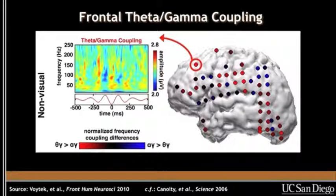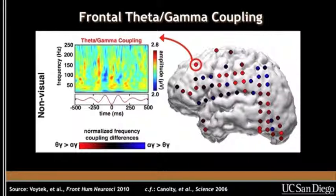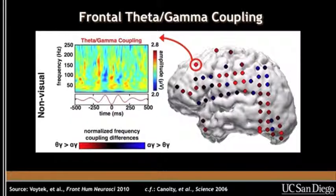Here you can see the event-related spectral perturbation in the colored plot, averaged across time and frequency based upon the phase of an ongoing theta oscillation. In the frontal cortex, for this particular electrode, the phase of the ongoing theta oscillation actually biases the probability of seeing high gamma activity, specifically during the trough. So when the theta oscillation hits the trough, high gamma activity increases, which we take as a surrogate for local neuronal population firing. The color of the electrodes on the surface of the brain indicates whether the theta or alpha oscillation more strongly biases gamma activity.